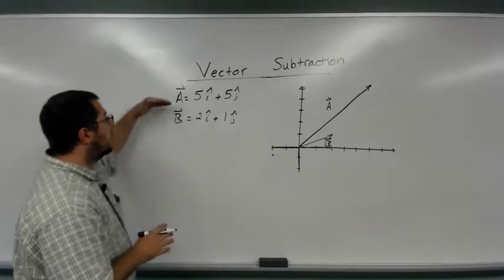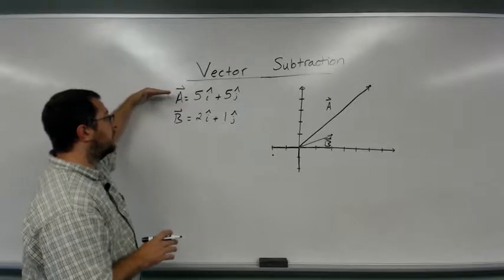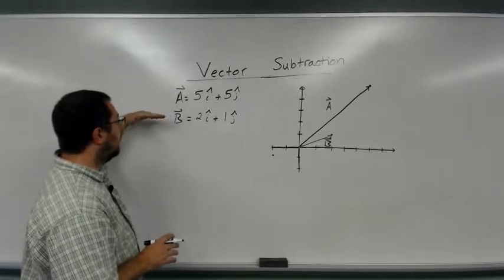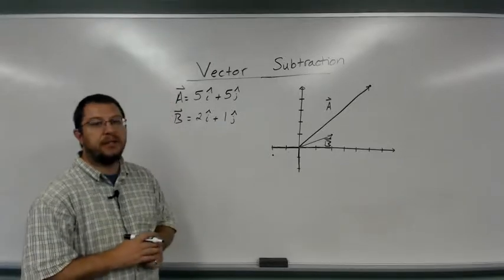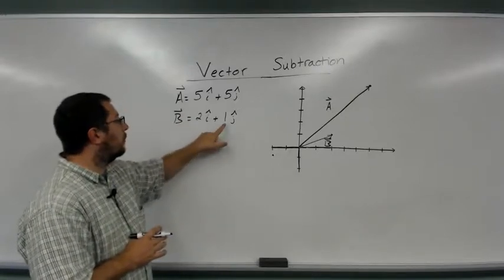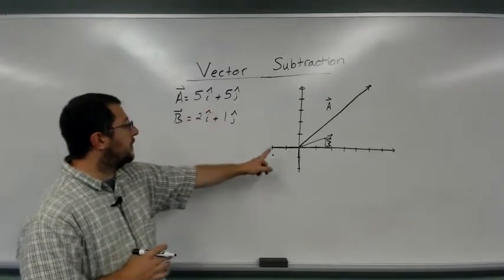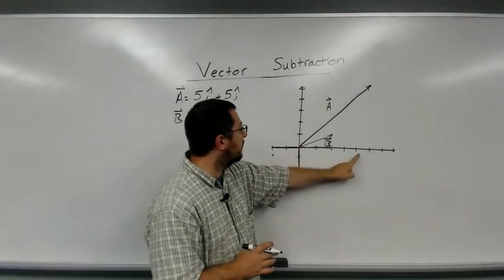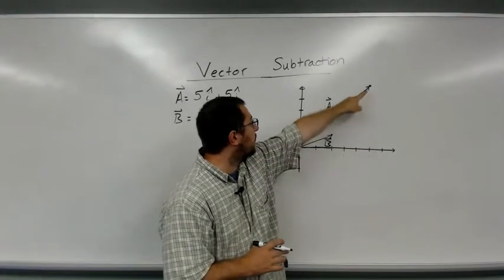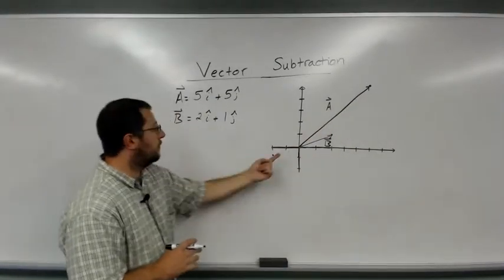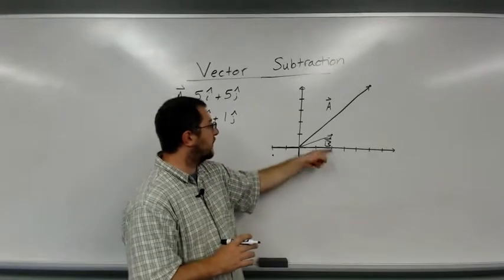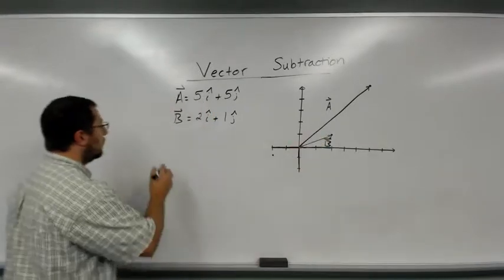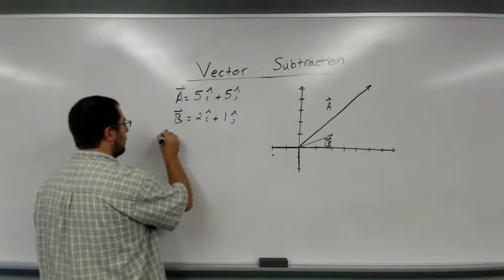In this case I have vector a which is 5i plus 5j and vector b which is 2i plus 1j. You can see that a is 5 units along the x axis and 5 units up, and vector b is 2 units along the x axis and 1 unit up.